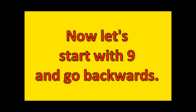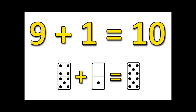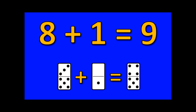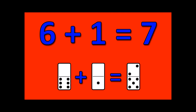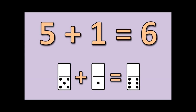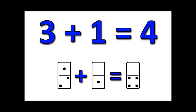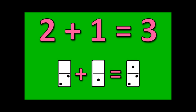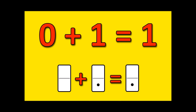Alright, great job! Now let's start with nine and go backwards. Ready? Here we go. Nine plus one is ten. Eight plus one is nine. Seven plus one is eight. Six plus one is seven. Five plus one is six. Four plus one is five. Three plus one is four. Two plus one is three. One plus one is two. Zero plus one is one.